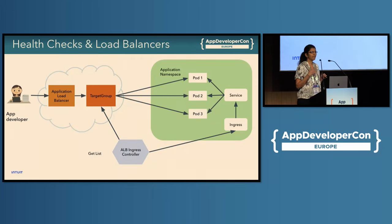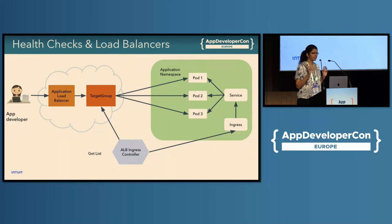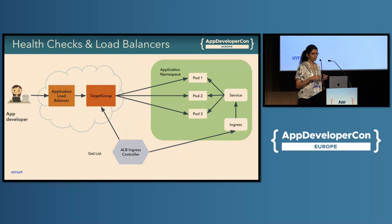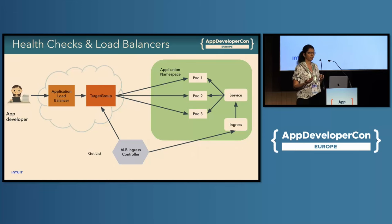There is the ALB ingress controller — a cluster add-on running on all of our Kubernetes clusters — that does a delicate dance of orchestrating traffic and registering and deregistering pods with the ALB target group. Just because a pod is up and running doesn't mean it's ready to accept traffic. The pod might need to set up database connections, warm up its cache, or do a lot of housekeeping before it becomes ready to take traffic.